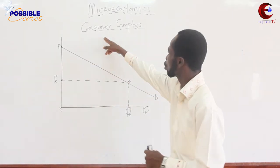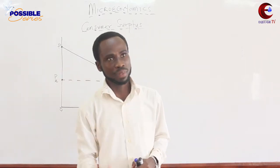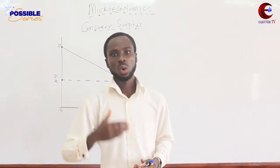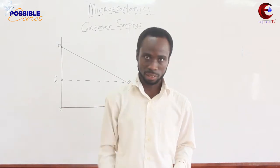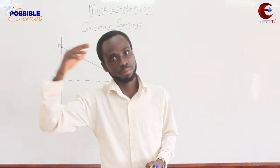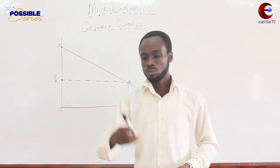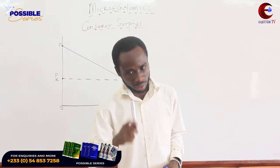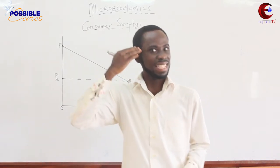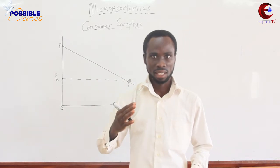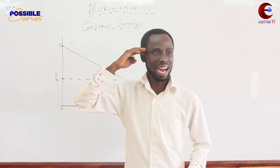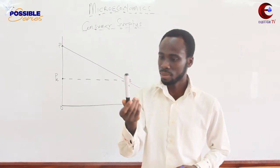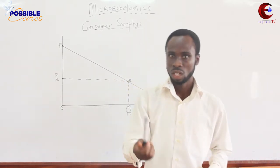So putting them together — Consumer Surplus — we are saying that sometimes in the market, when a consumer is going to a market, he or she goes with some expectation and anticipations, some estimates and forecasts. As a rational consumer, you have to go with a mindset of price estimates — like a forecast of price. So, say my estimate is to buy this item at a price of five Ghana cedis.